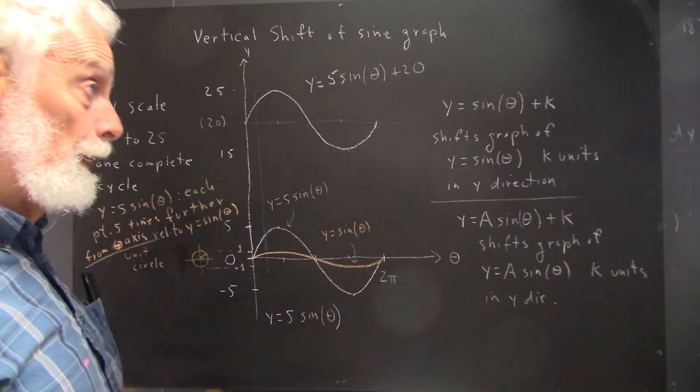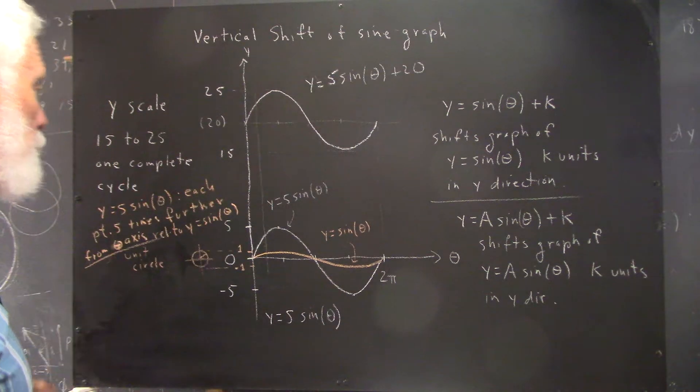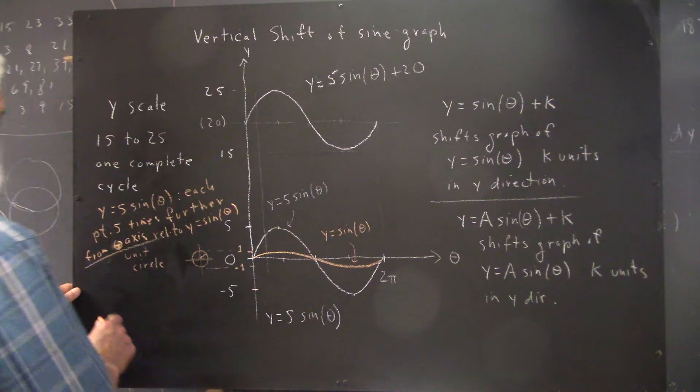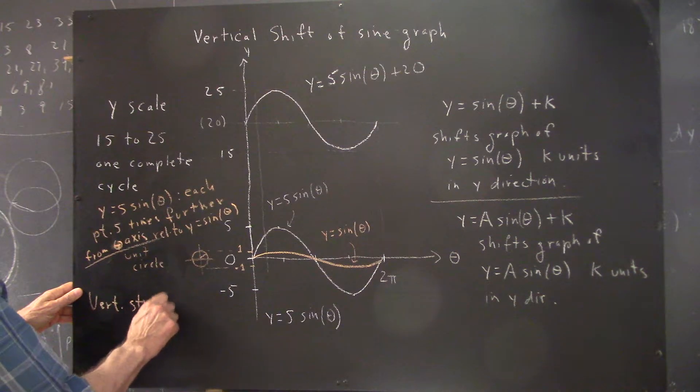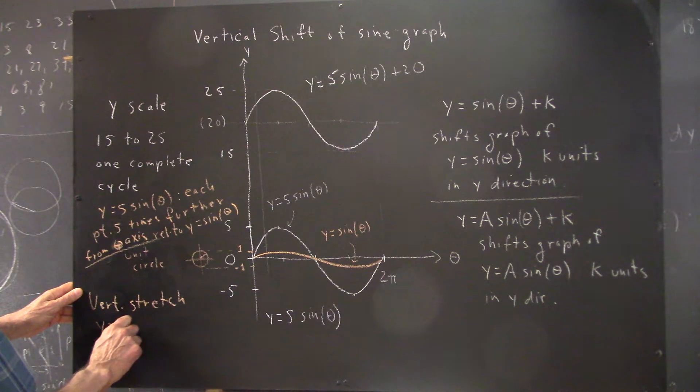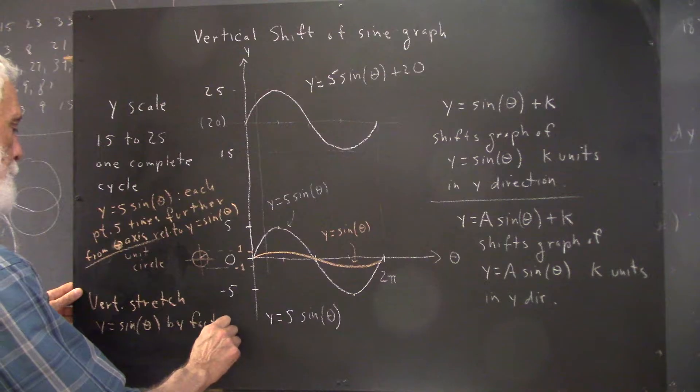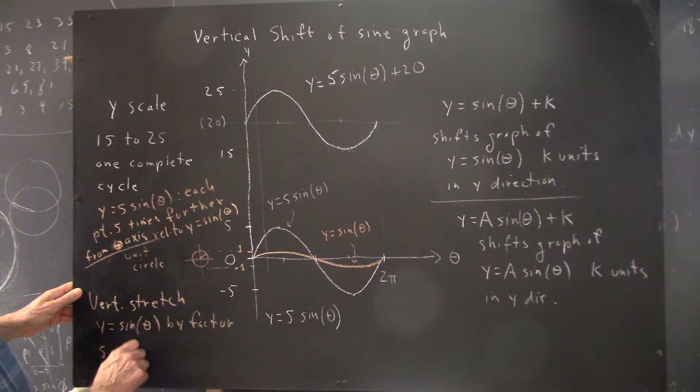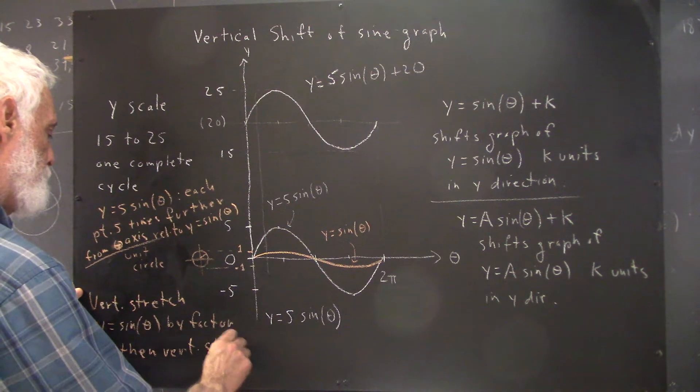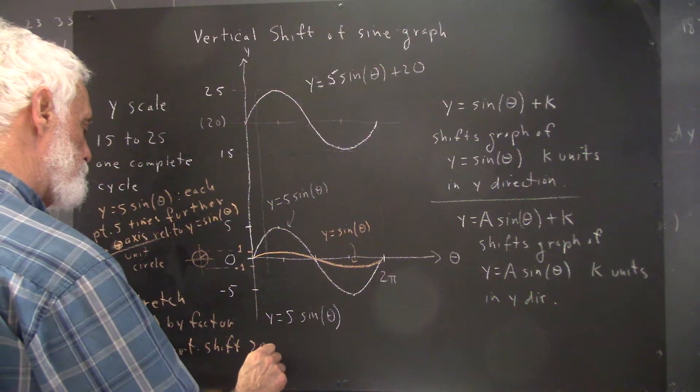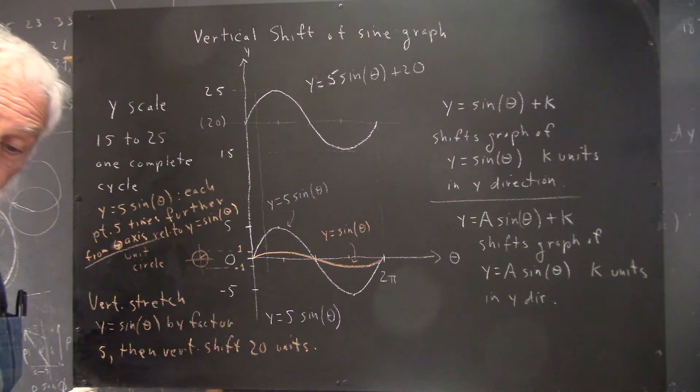So if it's below the axis, it's going to move five times further below. Let's call it a vertical stretch. So we vertically stretch y = sin(θ) by factor five, then vertically shift 20 units in this case.